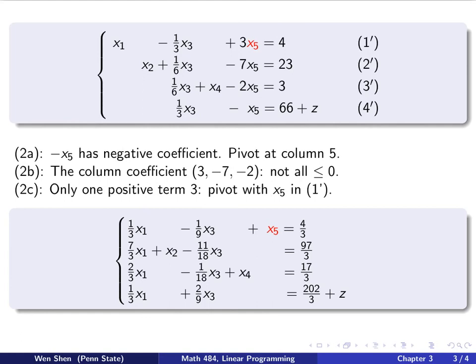We see that the basic variables are x2, x4, x5. The basic solution is x2 is this 97 over 3, x4 is 17 over 3, x5 is 4 over 3, and x1 and x3 are 0. And at this basic feasible solution, the value z is negative 202 over 3. And we know that this number is more negative than negative 66, so z becomes even smaller after the step.